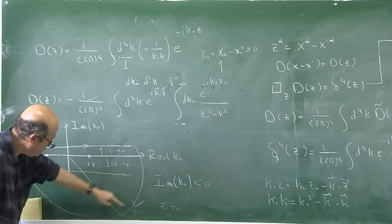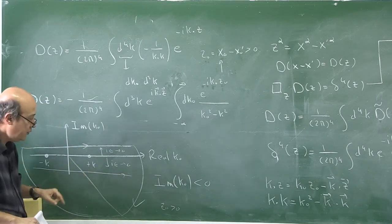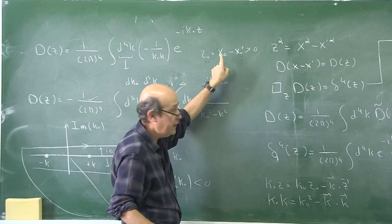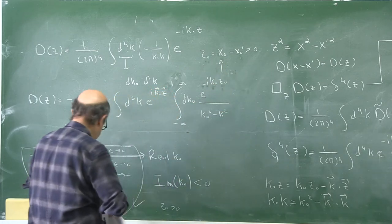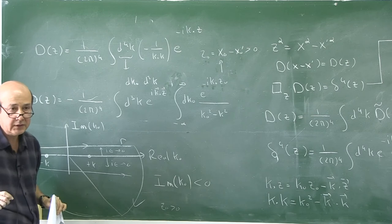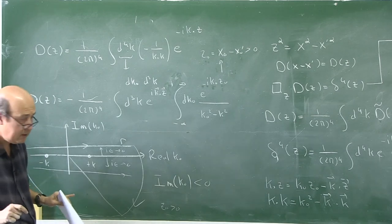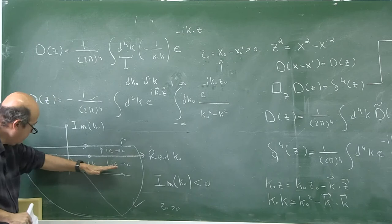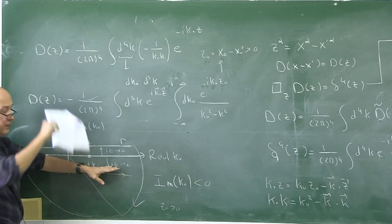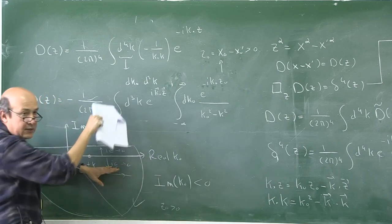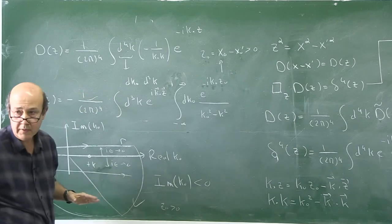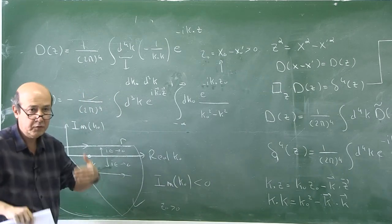This choice of contour defines the retarded Green's function: z⁰ > 0 means the event occurs before the observation. For z⁰ < 0, closing in the upper half-plane gives the advanced Green's function. We use the lower-half contour (retarded case): lift the poles up by iε, take the contour, evaluate residues, and the semicircular part vanishes.